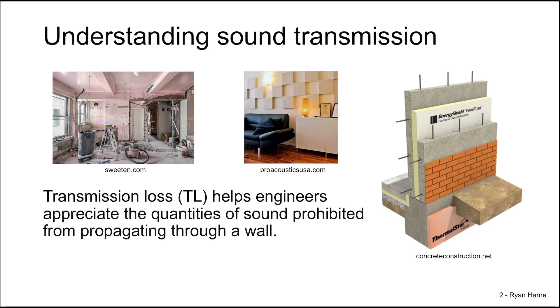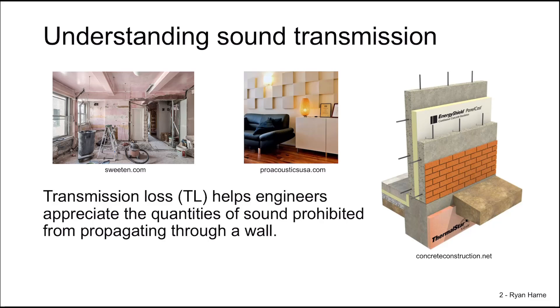Transmission loss data helps engineers appreciate the quantities of sound that are prevented from propagating through walls. These come in octave bands or potentially one-third octave band numbers, but all of these numbers are quite complex for designers who would prefer a much more straightforward way to understand the same information.